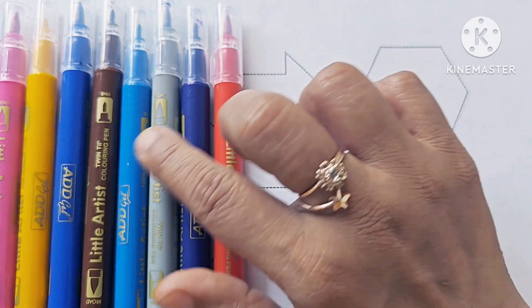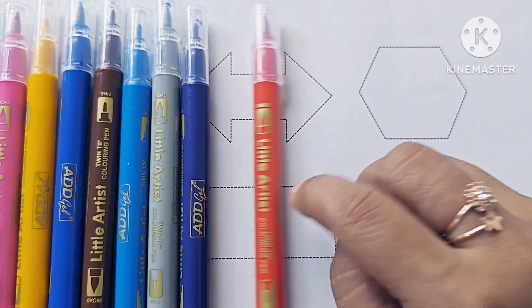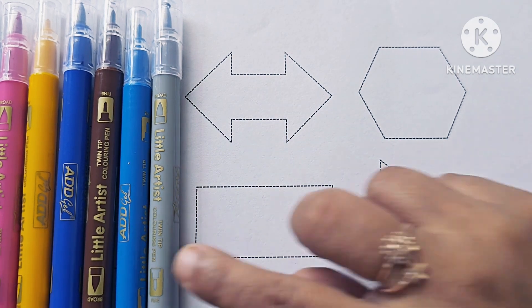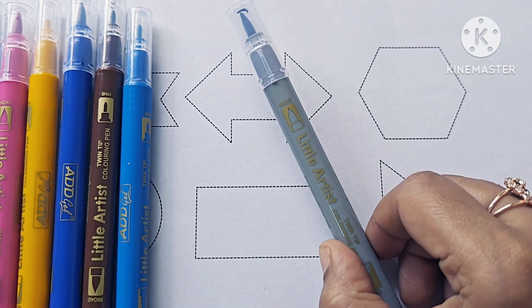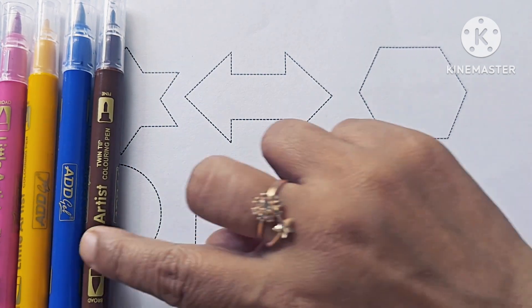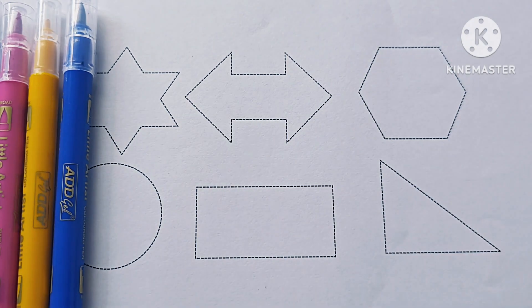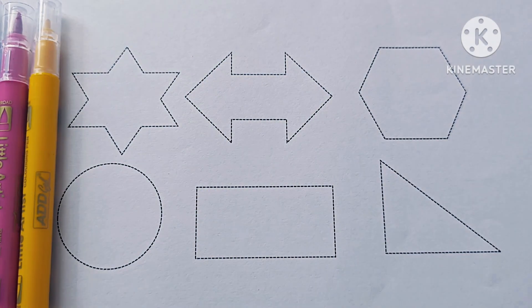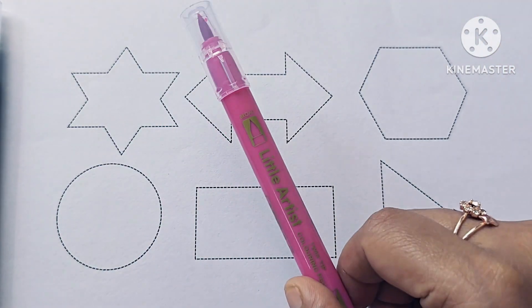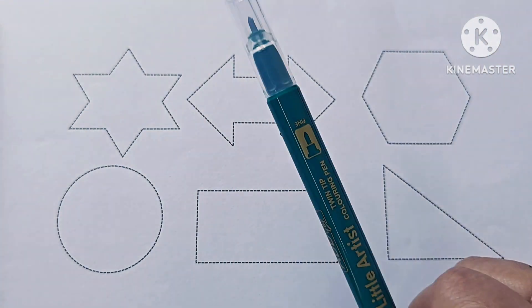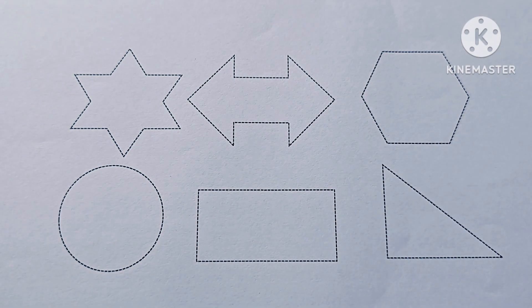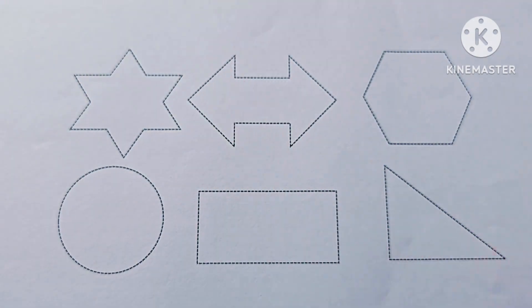Now, let us know about the color names. This is red, purple, grey, blue, brown, dark blue, yellow, pink, dark green, light green, orange.